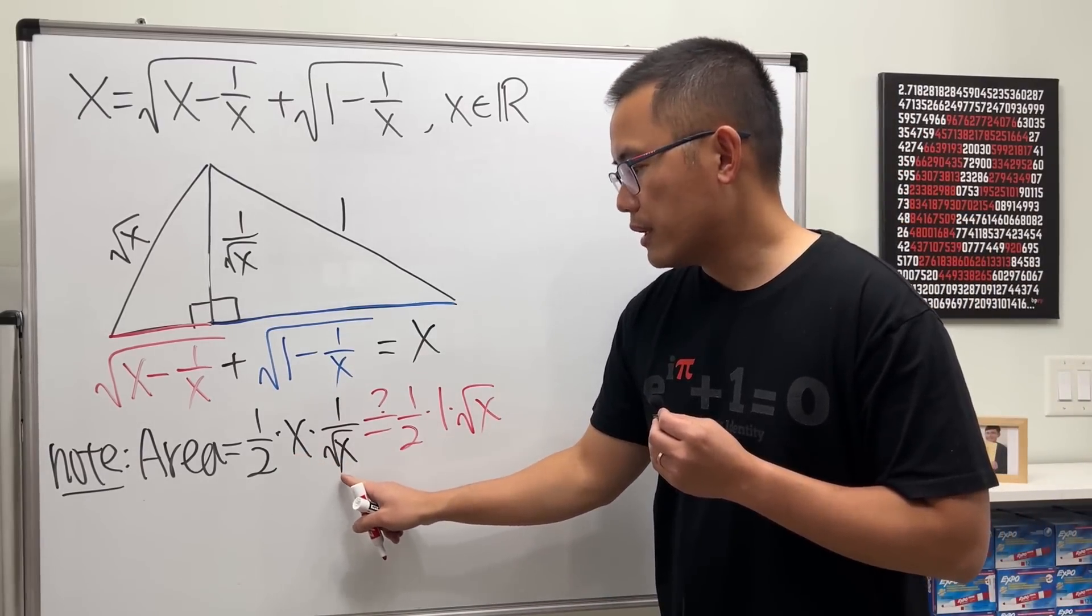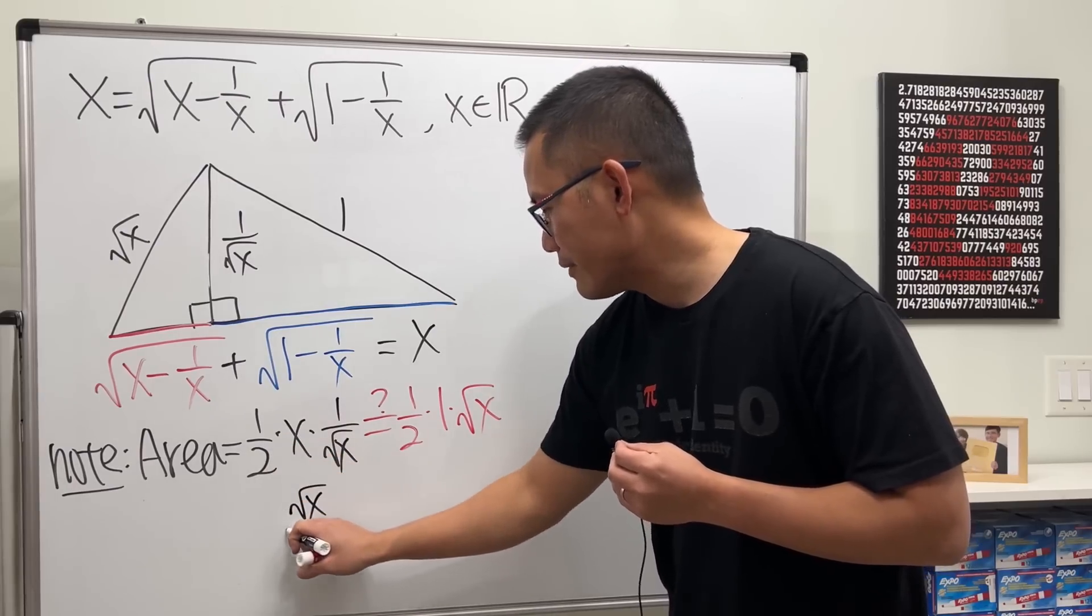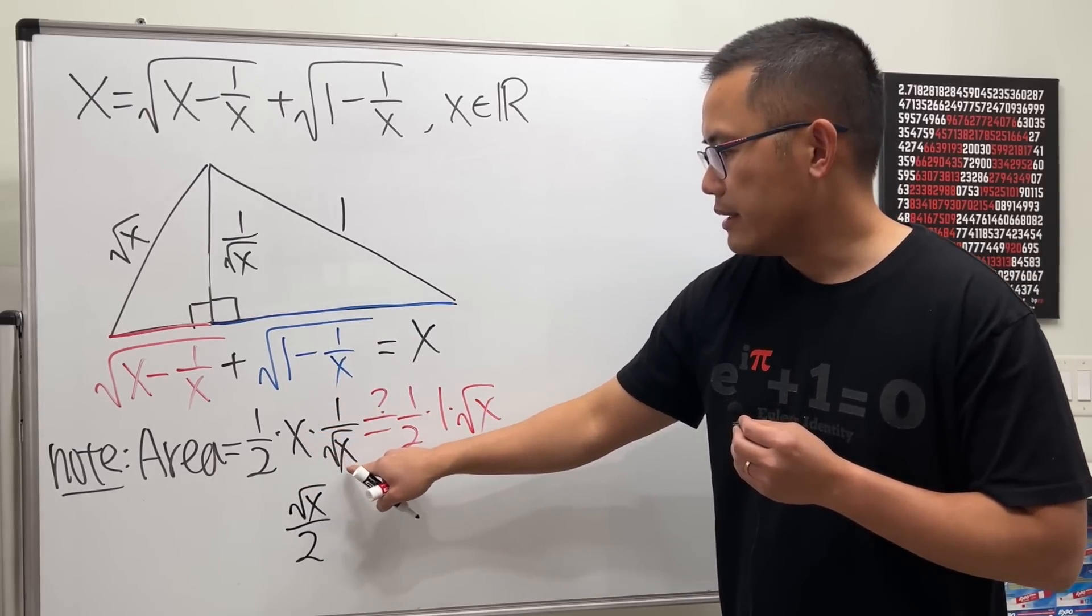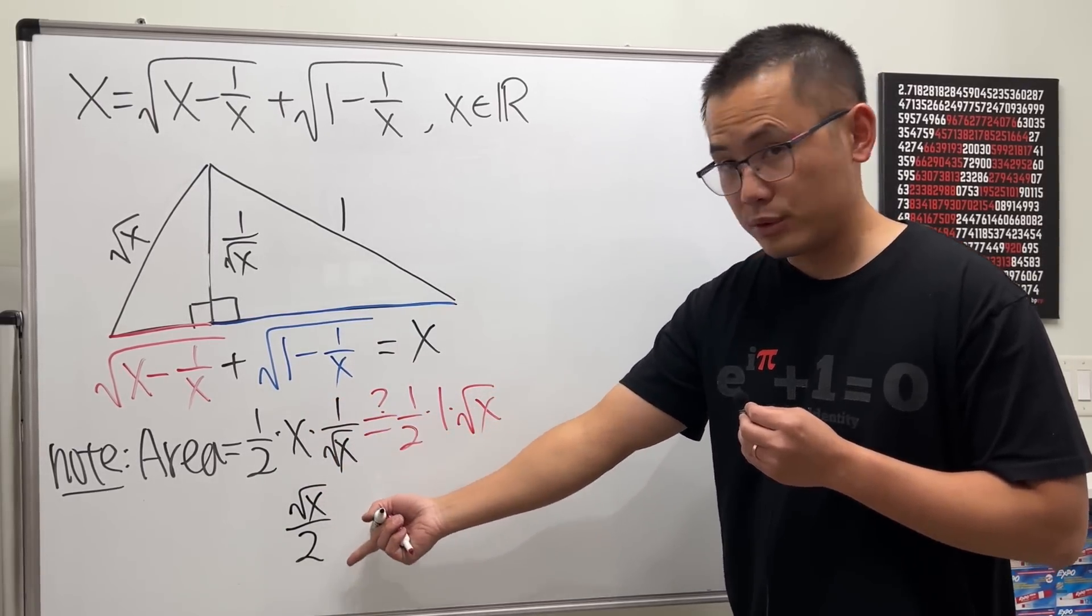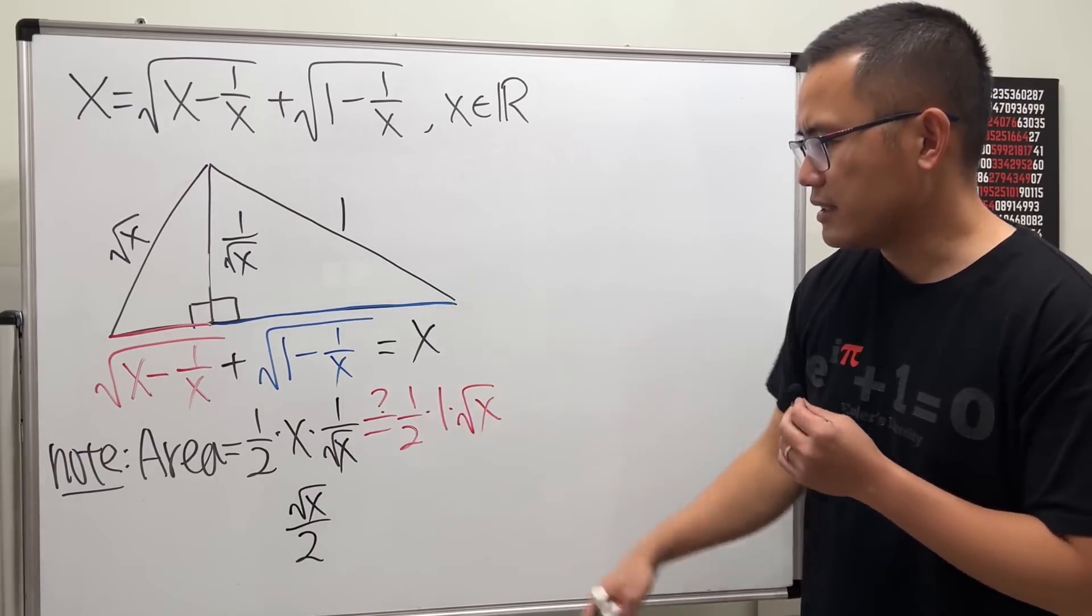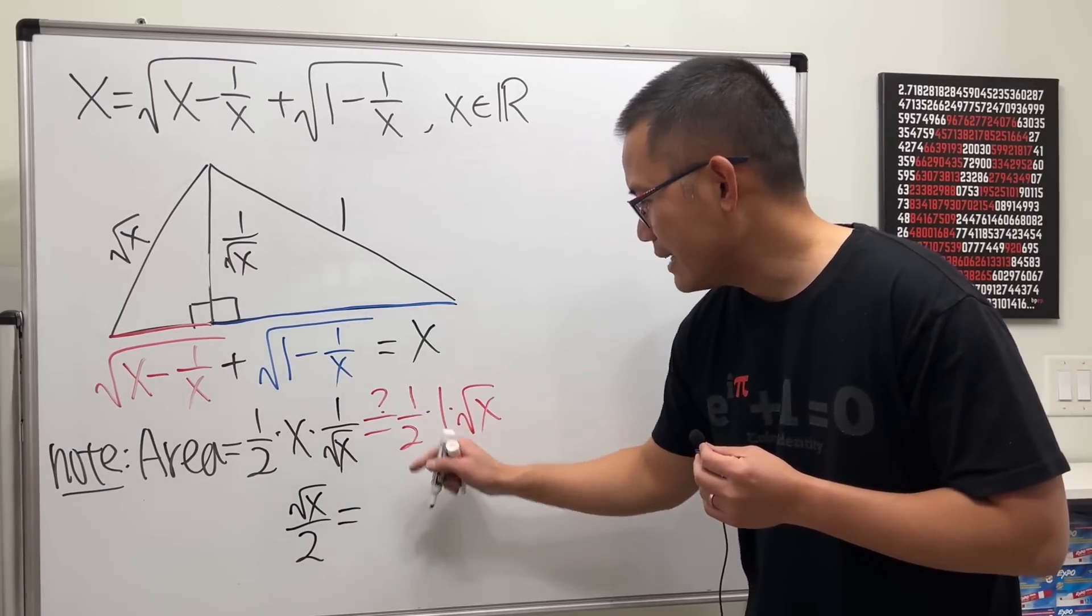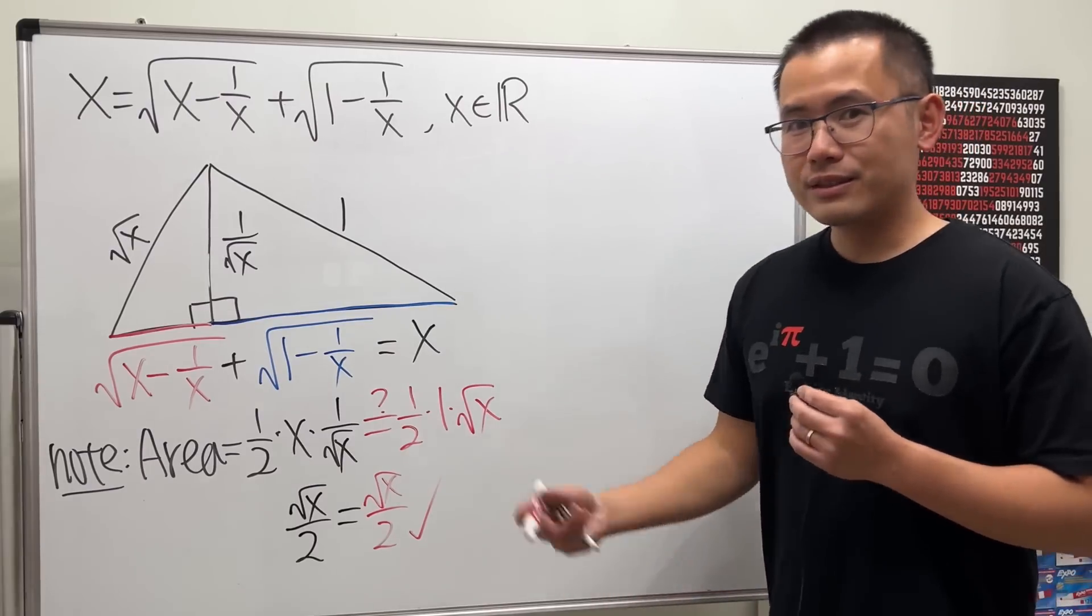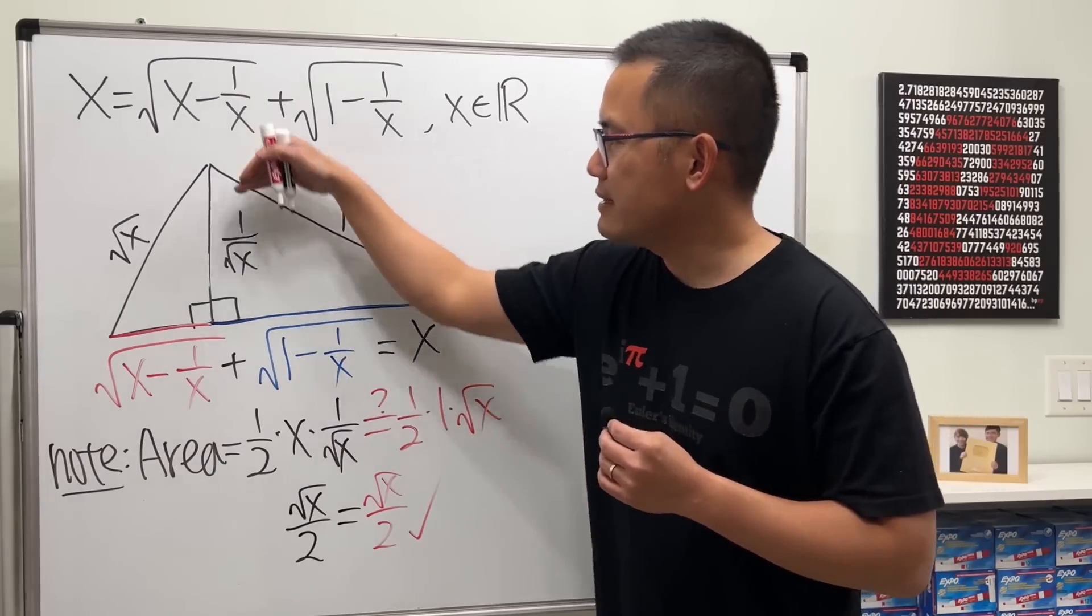x over √x is just √x on the top, and then we have that over 2. You can do x to the first power, and then this is x to the 1/2 power—1 minus 1/2 is x to the 1/2 power, so it's just like that. This is indeed equal to that, which is just √x over 2. So they match: base times height, base times height.